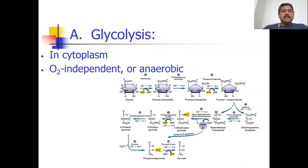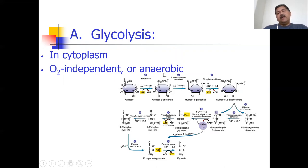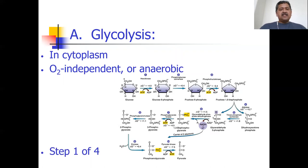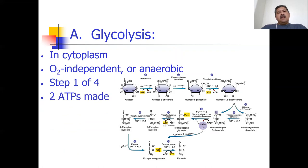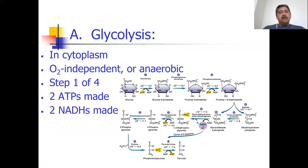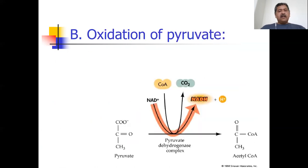Glycolysis is step one of four. It's independent of oxygen, anaerobic — just like aerobic exercise where you're huffing and puffing and requiring oxygen. In glycolysis, two ATPs are made directly and two NADHs are made. So that's the scorecard for glycolysis. The next step is the oxidation of pyruvate — it's just one chemical reaction, happens in the mitochondria, and requires oxygen.